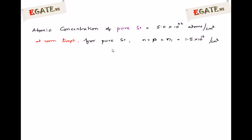Intrinsic concentration means the number of holes equals the number of electrons. For a pure semiconductor — also called an intrinsic semiconductor — the carrier concentration is NI = N = P = 1.5×10¹⁰ per centimeter cube.